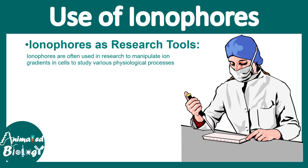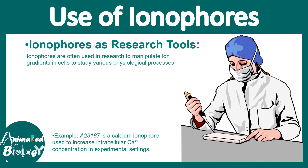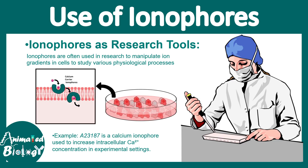Ionophores are also used as research tools. Sometimes one needs to create an artificial situation or perturbation in the laboratory. For example, A23187 is a calcium ionophore used to increase intracellular calcium in cells — it is a calcium carrier ionophore that carries calcium from outside to inside the cell.